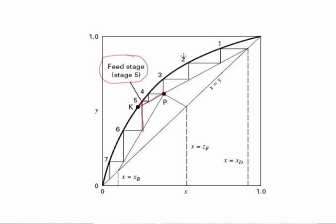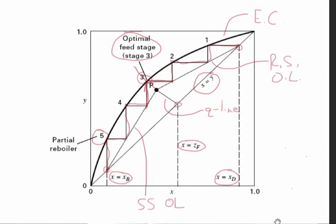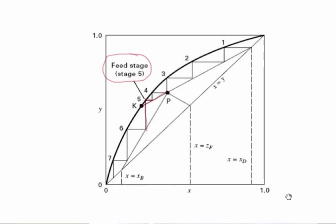Notice that for this system, we now require one, two, three, four, five, six, and a fractional part of a seventh equilibrium stage, with the bottom stage again being the partial reboiler. This is in contrast to the system shown above, where in order to accomplish the same separation, we have only five stages. So what this is telling us is that if we continue the rectifying section operating line beyond the Q line and continue stepping on that operating line — putting the feed stage further down the column — we require more equilibrium stages to accomplish the same separation.